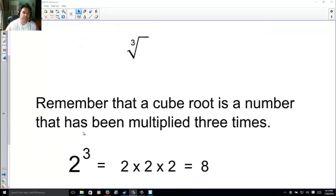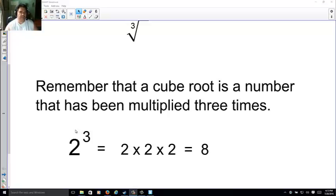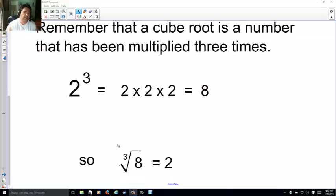Remember that a cube root is a number that's been multiplied three times. So 2 to the third power means 2 times 2 times 2, that makes 8. And the cube root of 8, or cube to the third power of 8, is 2. Because, aforementioned, 2 times 2 times 2 makes 8.